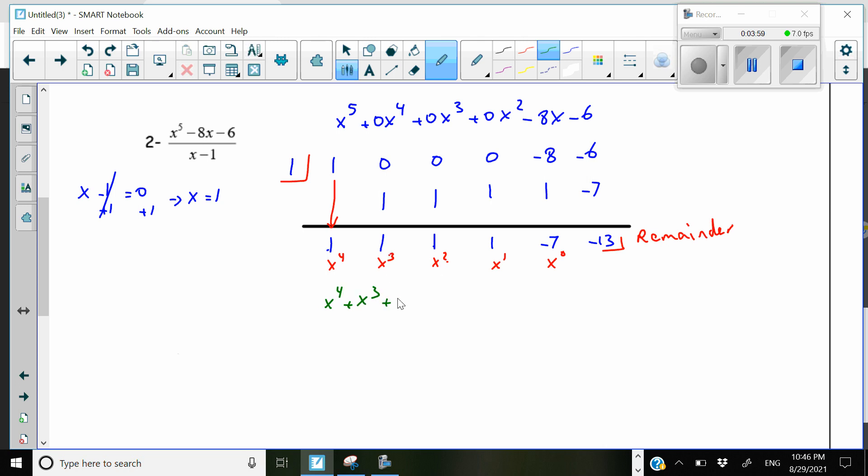1 times x squared. 1 times x to 1, I can just write that as x. Negative 7 times x to 0. We know that anything to the power of 0 is basically equal to 1.